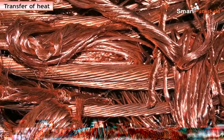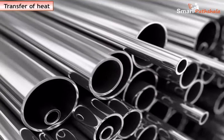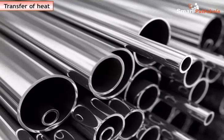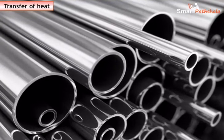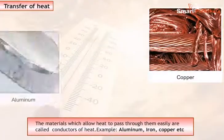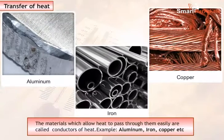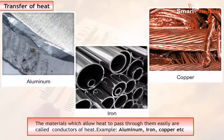However, all substances do not conduct heat equally. Based on the conduction of heat, materials are broadly classified into two types: conductors and insulators. The materials which allow heat to pass through them easily are called conductors of heat. Metals like aluminum, iron, copper, etc. are some examples of conductors.